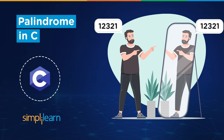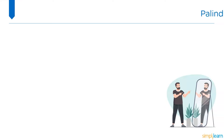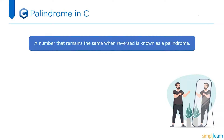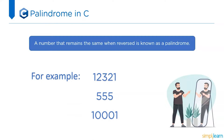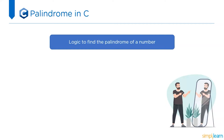Welcome to another interesting and informative video by Simply Learn. In today's video we're going to look at the logic of a palindrome program. A number that remains the same when reversed is known as a palindrome. For example, it could be 12321, 555, or 10001 — these are examples where numbers remain the same even when reversed.